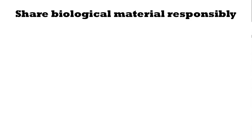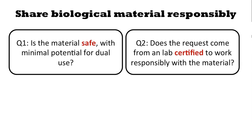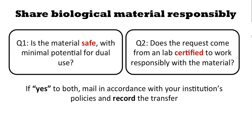Let's use these guidelines as a model for how we should consider sharing biological materials. We should ask ourselves: Is the material safe with minimal potential for dual use? Does the request come from a lab certified to work responsibly with the material? If somebody asks for a risk group 2 chassis or a virulence factor from a risk group 2 organism, we would want to be sure that they're capable of working at biosafety level 2 — not only capable, but certified. If yes to both, mail in accordance with your institution's policies and record the transfer. Note that sending biological materials over the mail requires particular rules, so make sure you're mailing them properly if you choose to do so.